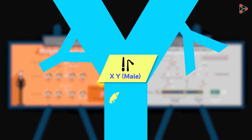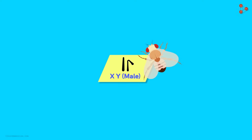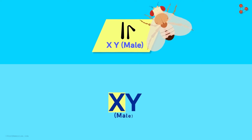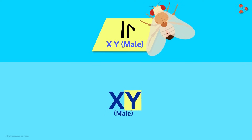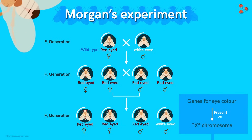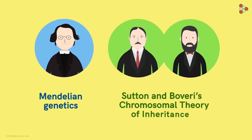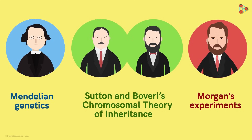If the alleles were present on the Y chromosome, the trait would be visible only in males, because in Drosophila males have one X and one Y chromosome while females have two X chromosomes. To summarize, this experiment helped Morgan prove that genes are present on chromosomes, that the genes for eye colour are on the X chromosome in the fruit fly, and that genes are passed from one generation to the next. This is how Mendelian genetics, as well as Sutton and Boveri's chromosomal theory of inheritance, were both better proved through Morgan's experiments.